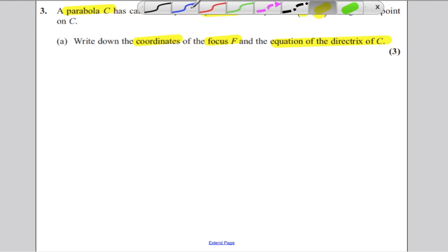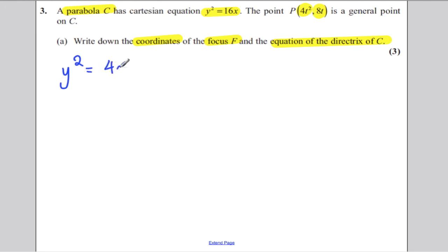Okay, you should know that the general equation of a parabola is y squared is equal to 4ax, and that's given in your formula booklet. Now, we are told in our case that y squared is equal to 16x, therefore equating these, 4a must be equal to 16. So from that, we can say that 4a must equal 16, and that gives us that a must equal 4.